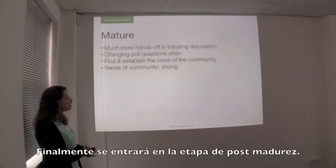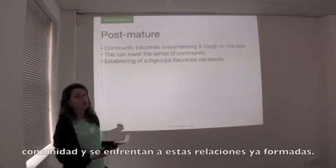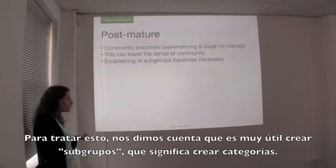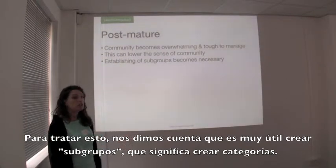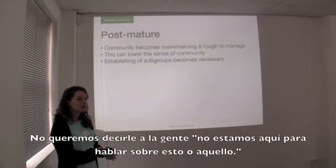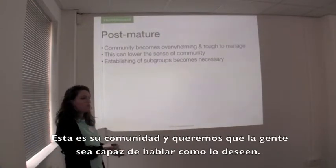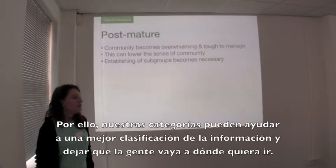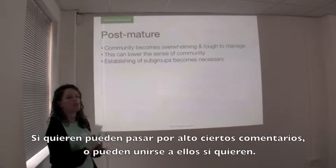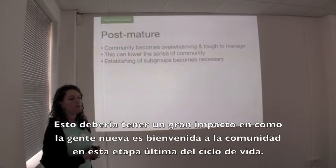Once you reach the mature stage, you can get into the post-mature stage. It can become tough to manage, especially for people who are new and coming to the community and seeing relationships that have already formed — and sometimes it's hard to control what goes on there. What we've realized will be very helpful is creating subgroups, and that's exactly what we're going to talk about with categories. We don't want to tell people they can't talk about certain things or make jokes — it is a community and we want people to be able to do that. The categories will really help sort information and let people go where they want to go. If they want to skip over jokes they can, and if they want to join in they can too. That will definitely have a huge impact on how new people are welcomed and how existing members interact.